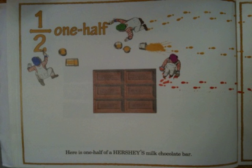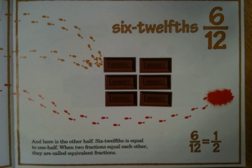One half. Here is one half of a Hershey's milk chocolate bar. Six twelfths. And here is another half. Six twelfths is equal to one half. When two fractions are equal — when two fractions equal each other — they are called equivalent fractions.